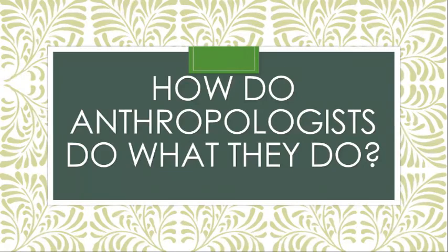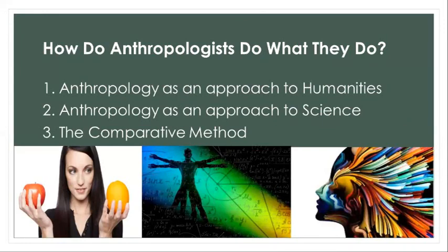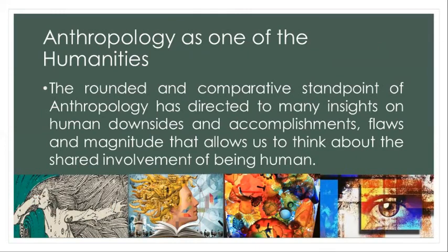How do anthropologists do what they do? Number one, anthropology as an approach to humanities; number two, anthropology as an approach to science and the comparative method. When we speak of humanities, it refers to stories, ideas, and the words that help make sense of our lives and our world. Humanities is an academic discipline that seeks to understand, appreciate, and critique humans in all depths and range of meaning. The rounded and comparative standpoint of anthropology directs many insights on human downsides and accomplishments, flaws and magnitude, allowing us to think about the shared involvement of being human.